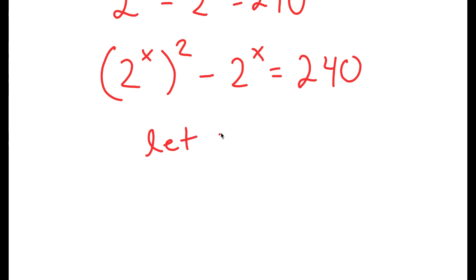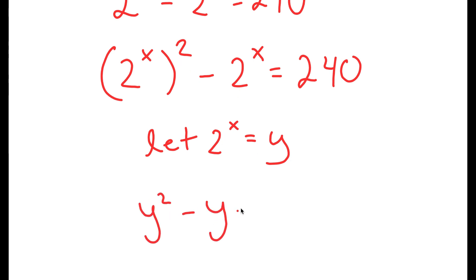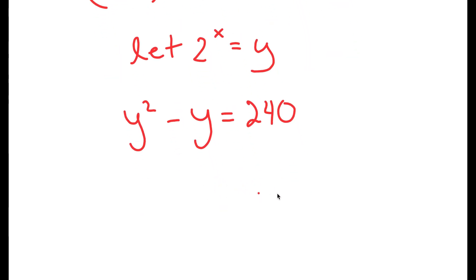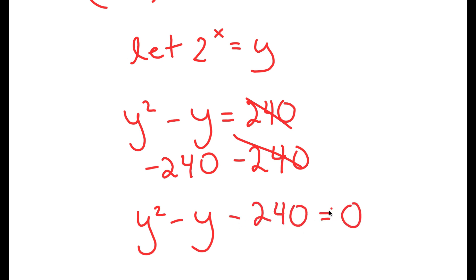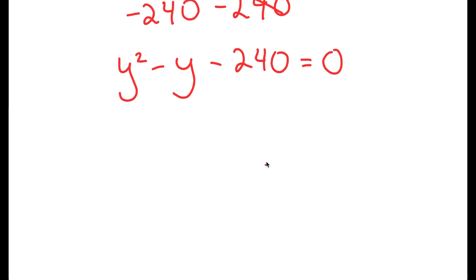Now I'm going to let 2 to the power of x equal the variable y. If I substitute y in for 2 to the power of x, I get y squared minus y is equal to 240. Subtracting 240 from both sides, I get y squared minus y minus 240 is equal to 0. What I have here is a quadratic equation.